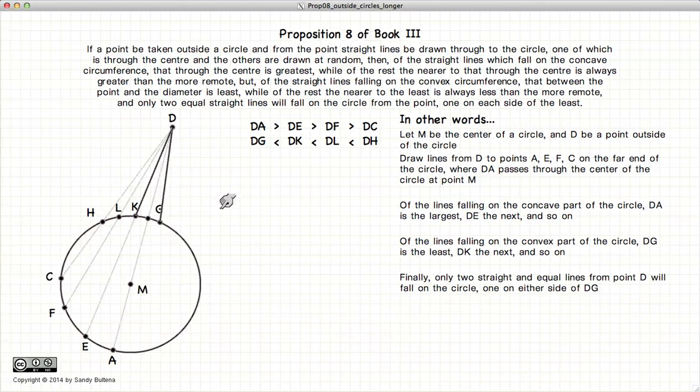And finally, if you have a line DK, there is one and only one other line, DG, that will be equal in length to DK.